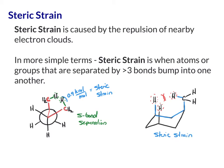In both of those examples, it happened to be a five-bond separation between the atoms involved in strain, but that doesn't have to be the case. It can be four bonds or more than five bonds.